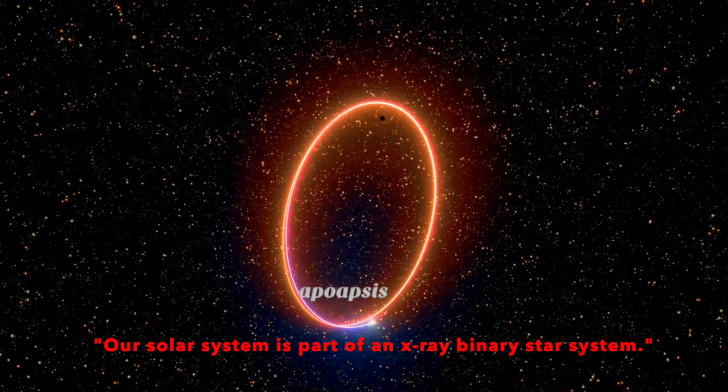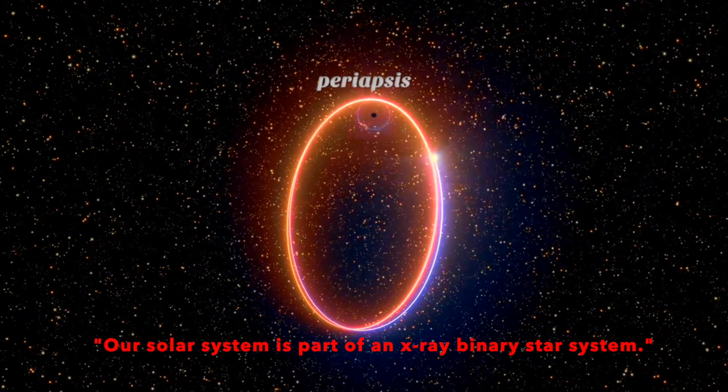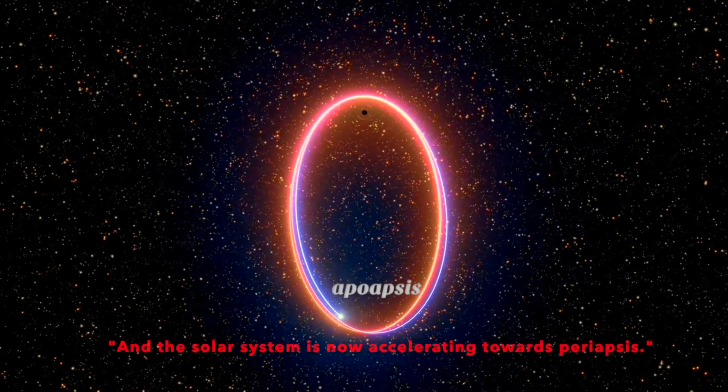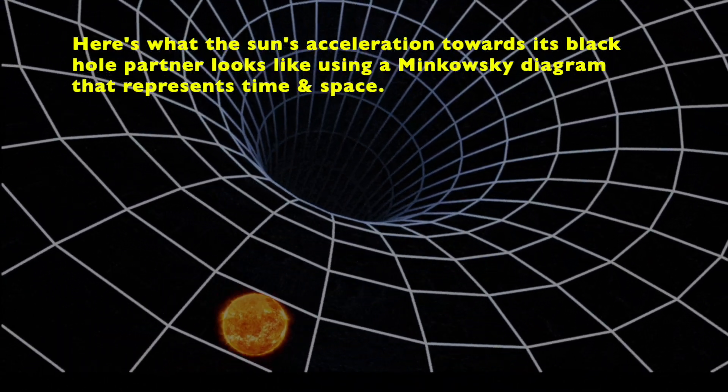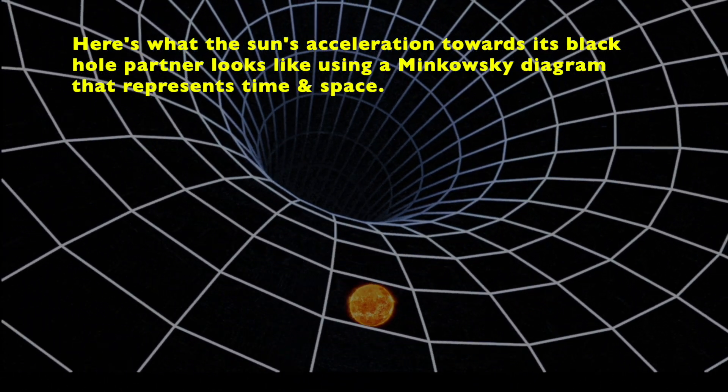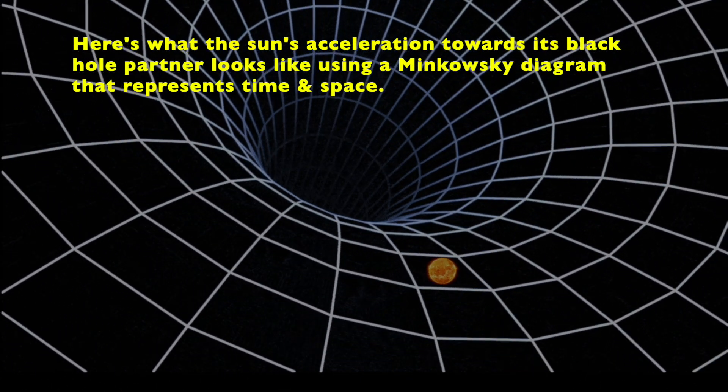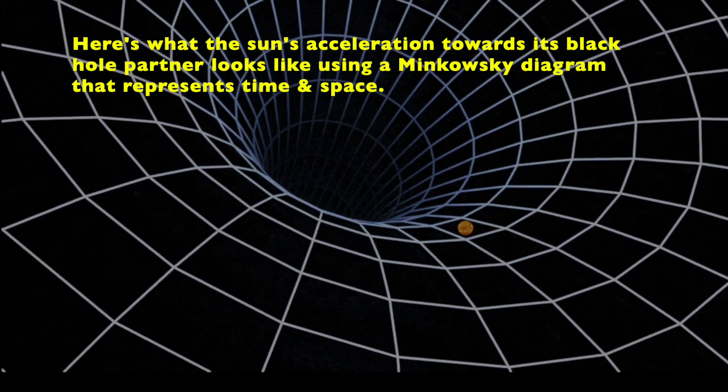Our solar system is part of an X-ray binary star system, and the solar system is now accelerating towards periapsis. Here's what the Sun's acceleration towards its black hole partner looks like using a Minkowski diagram that represents time and space.